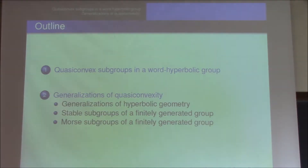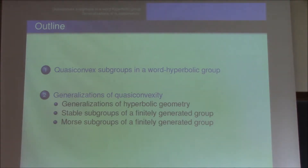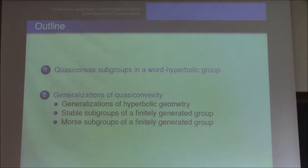Here is the outline. First, we briefly discuss quasi-convex subgroups in word hyperbolic groups, and then see some generalizations of hyperbolic geometry, and then discuss stable subgroups and Morse subgroups of finitely generated groups, and then discuss my recent work.